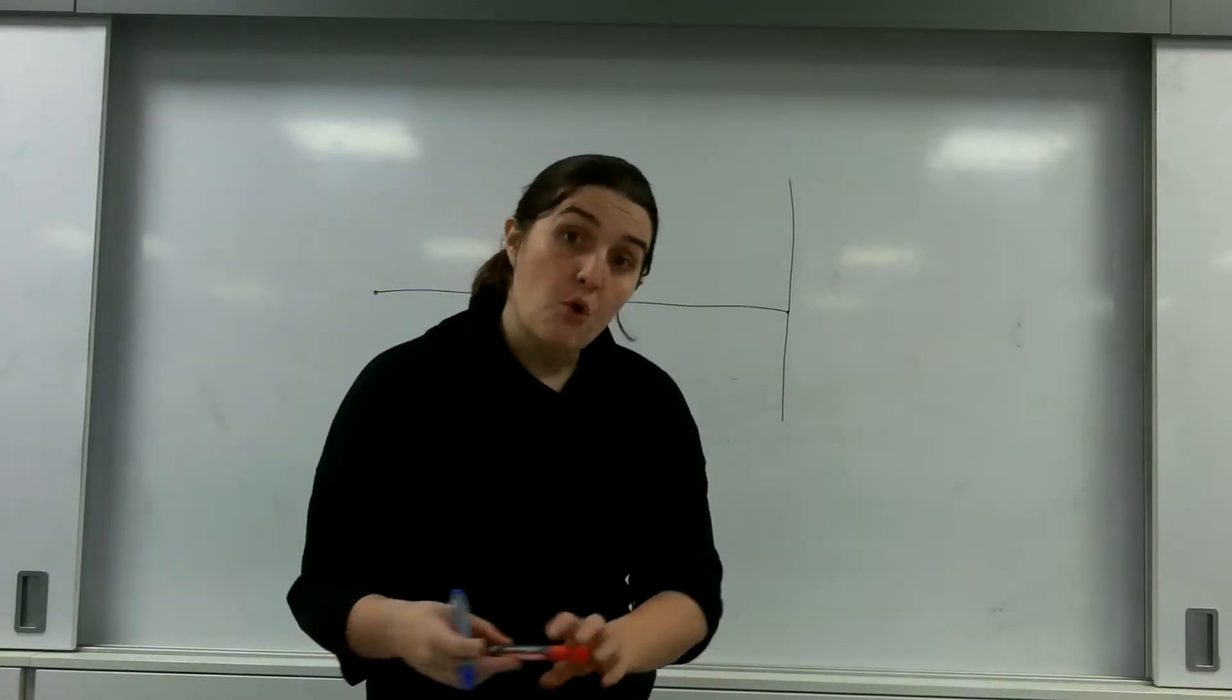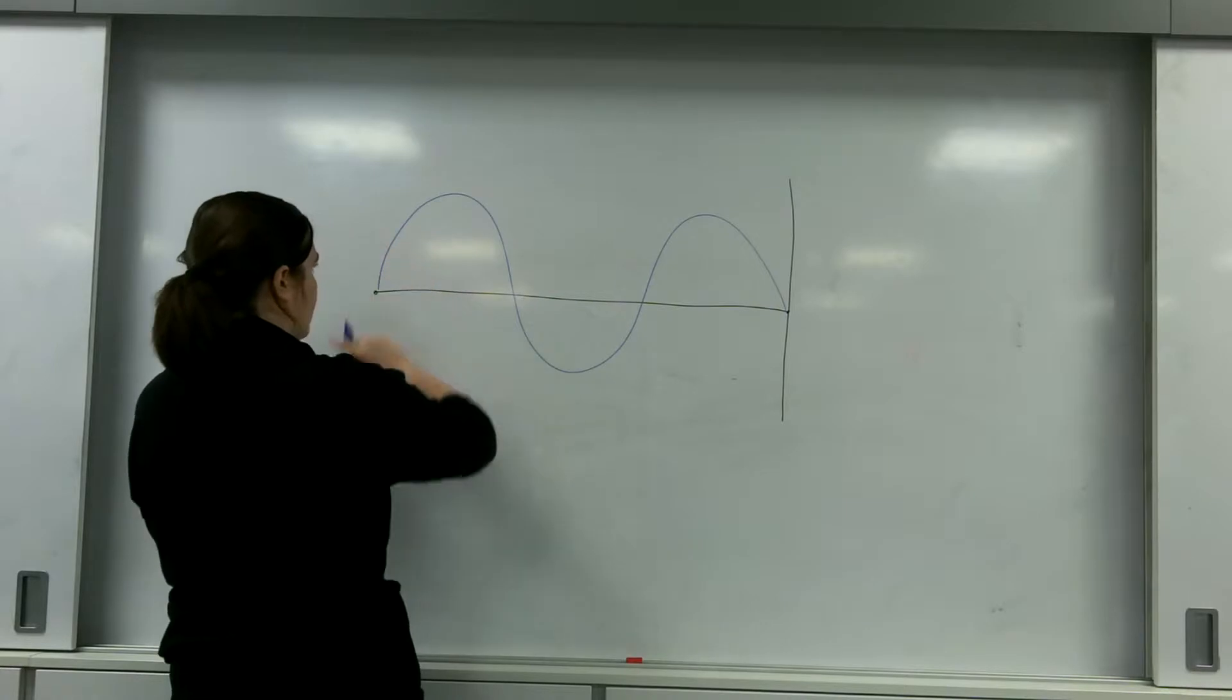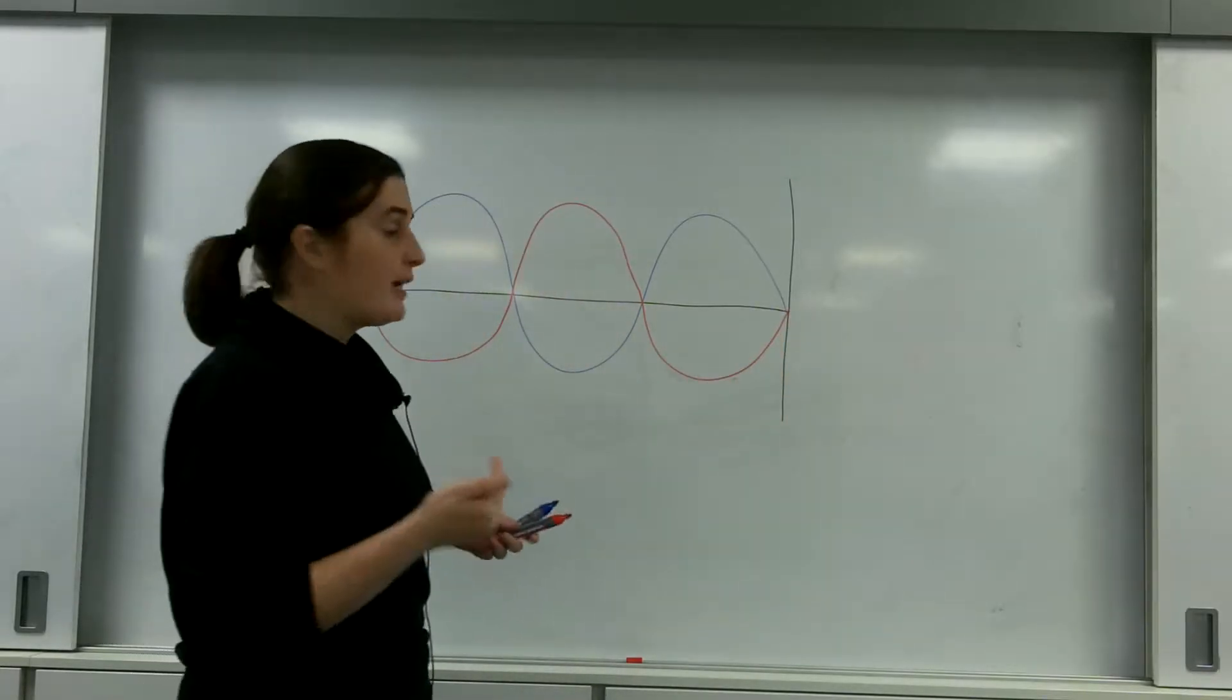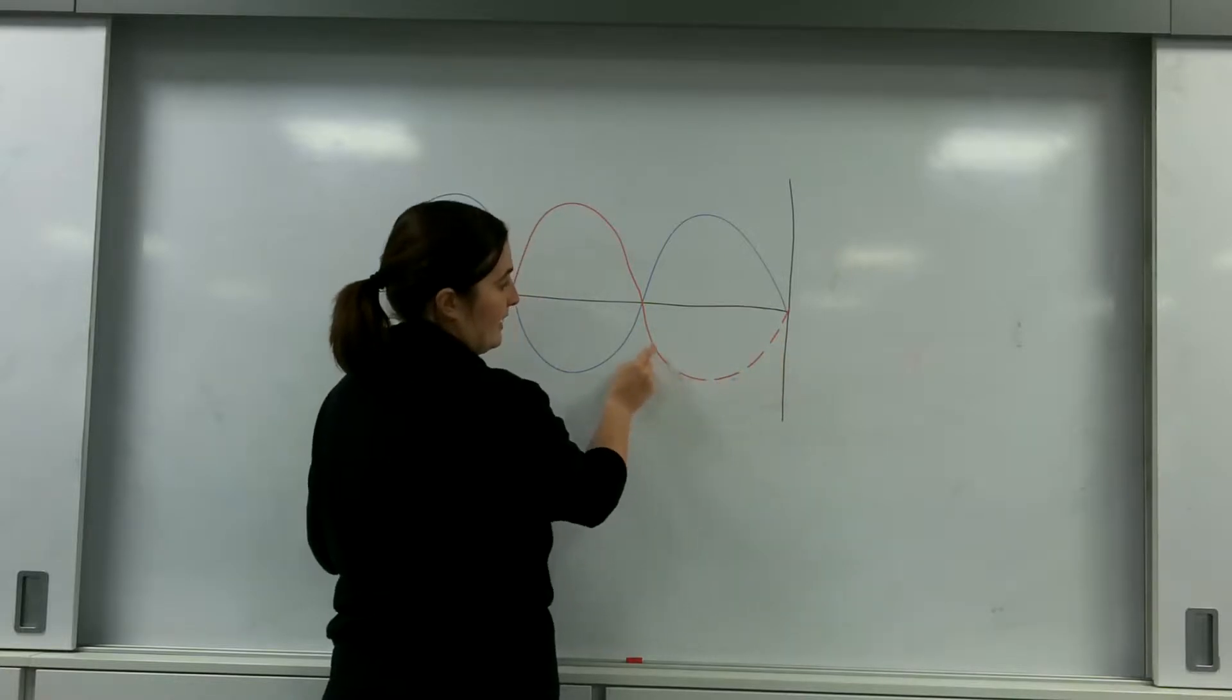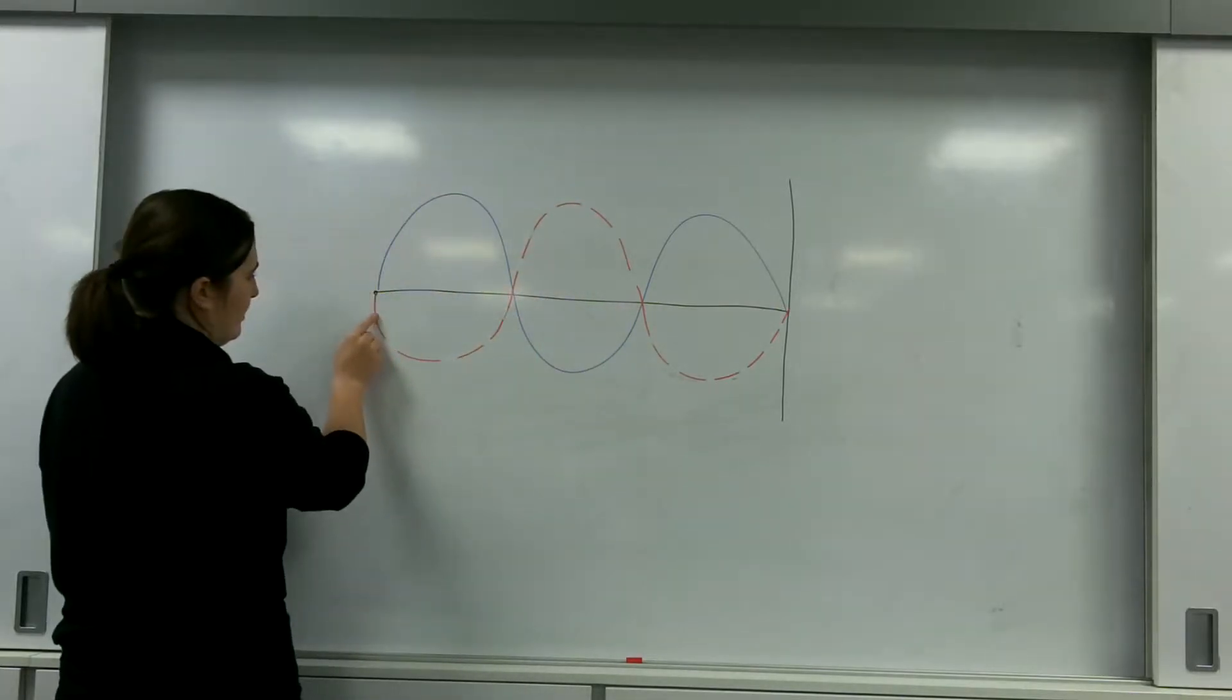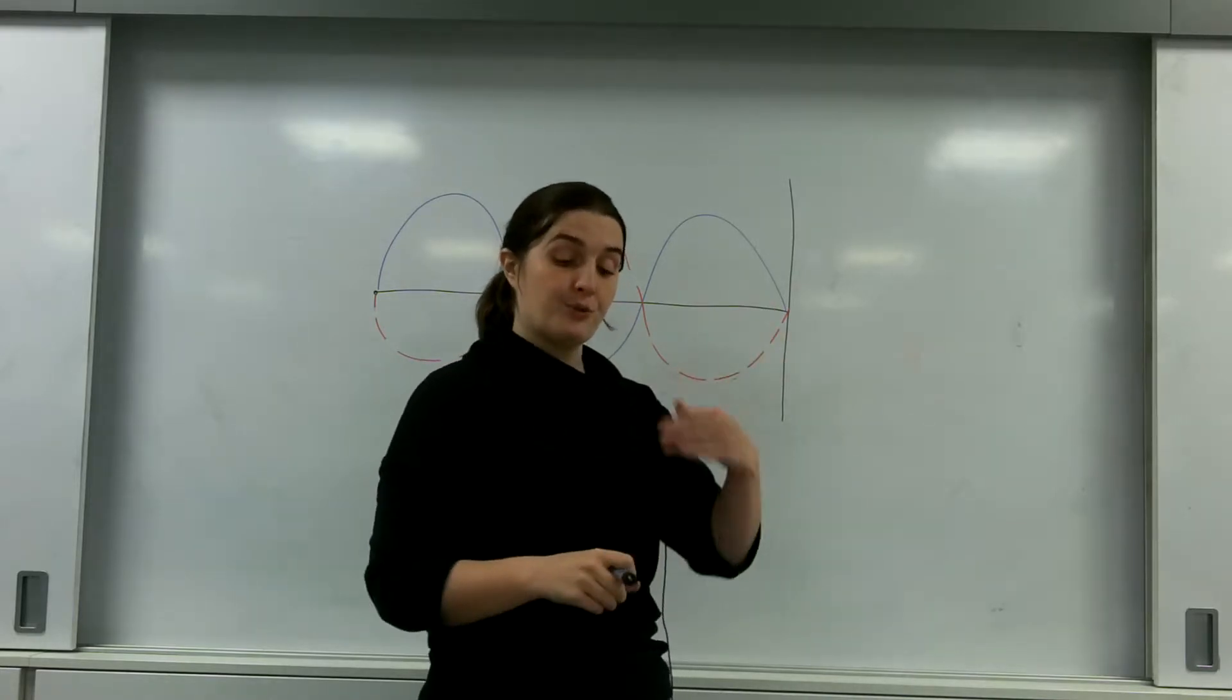Now how we draw a standing wave is we draw it like this. Sometimes you may see the second line done in dashes. Sometimes you'll see it's solid. And this is the resultant wave from the forward wave and its reflection.